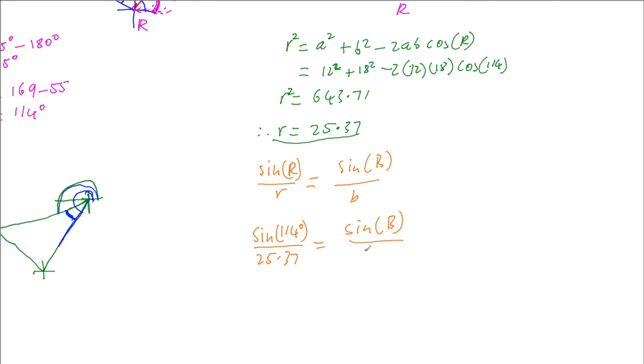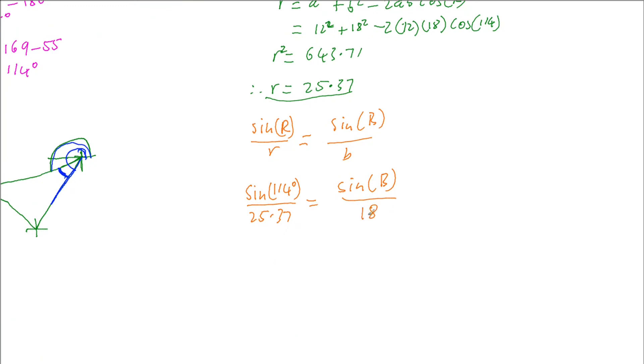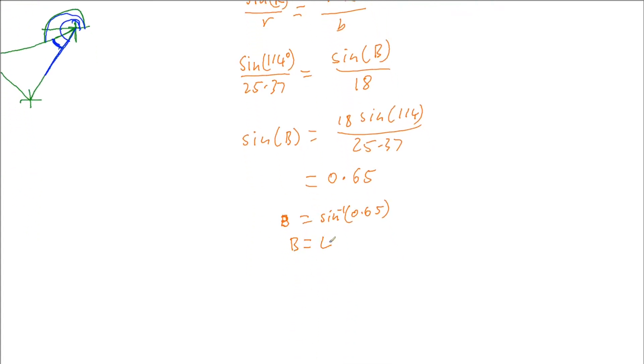So sine B is 18 sine 114 on 25.37, which gives us 0.65648. And therefore B will be the inverse sine of 0.65, which gives us an angle of 40.4002 degrees. So 40.4 degrees.